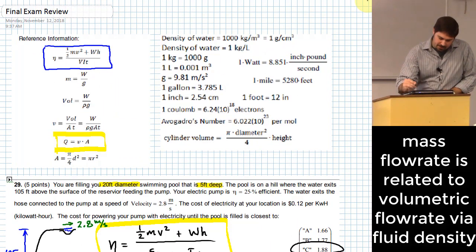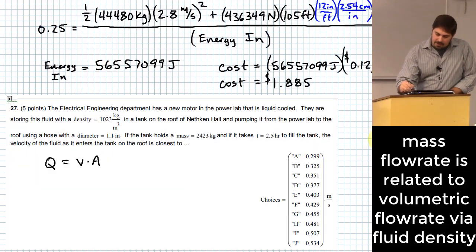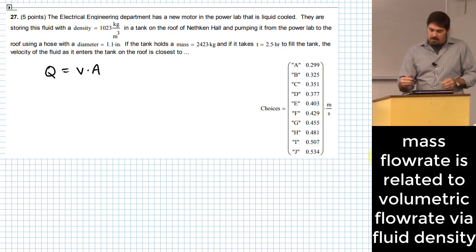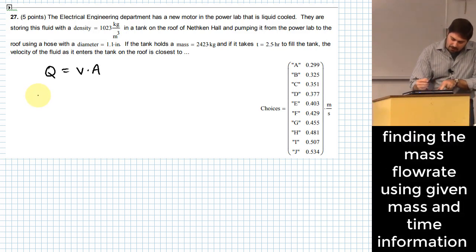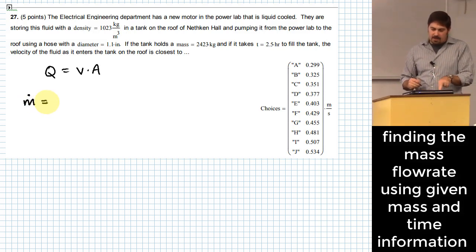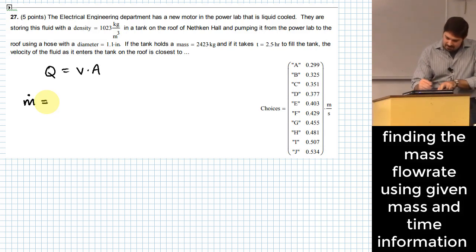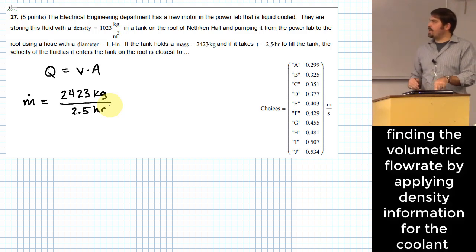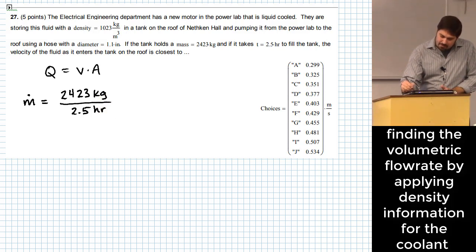Maybe we'll look up here and see if there's any other place that there's Q. Maybe we don't have anything directly that gives us Q, but it's easy enough to figure out just based on what it is. It's amount of volume that flows per unit of time. One way of thinking about that is we know the mass flow rate, which a lot of times you can represent with m dot. What this is is the amount of mass divided by the amount of time. Pretty simple for that one, right? 2,423 kilograms per 2.5 hours.